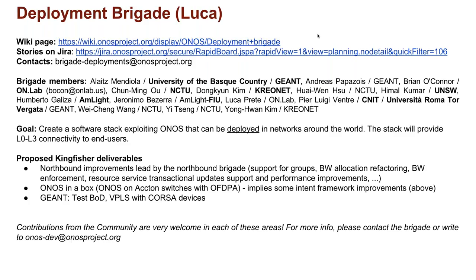The proposed deliverables for Kingfisher include lots of northbound improvements started in Junco, including support for groups, bandwidth allocation, bandwidth enforcement, and different improvements in the resource service. We can go into detail on this when we talk about the Northbound Brigade.